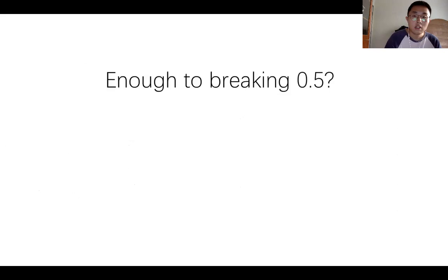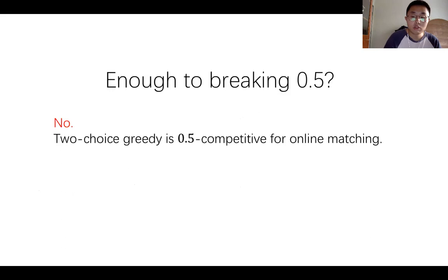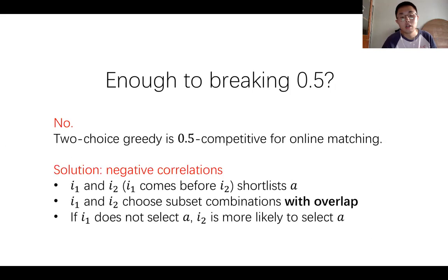The next question is: is our panoramic viewpoint with two-choice greedy enough to break 0.5? The answer is no. It is not difficult to prove that two-choice greedy is also 0.5 competitive for the classical online bipartite matching model. Our solution is to involve negative correlations in different randomized rounds. Instead of using a fresh random bit to select a shortlist of advertisers for each impression, our algorithm selects one with negative correlation.